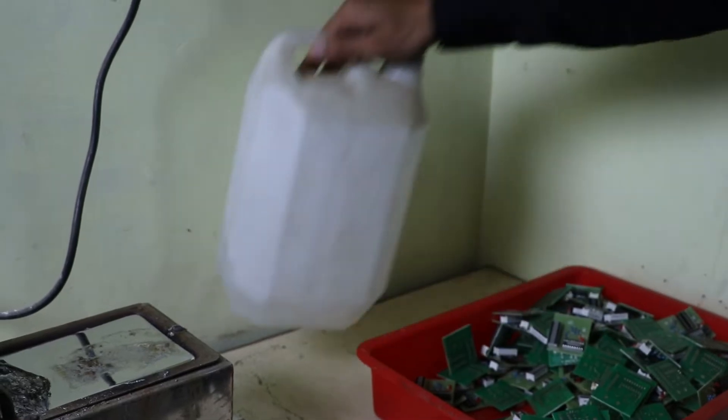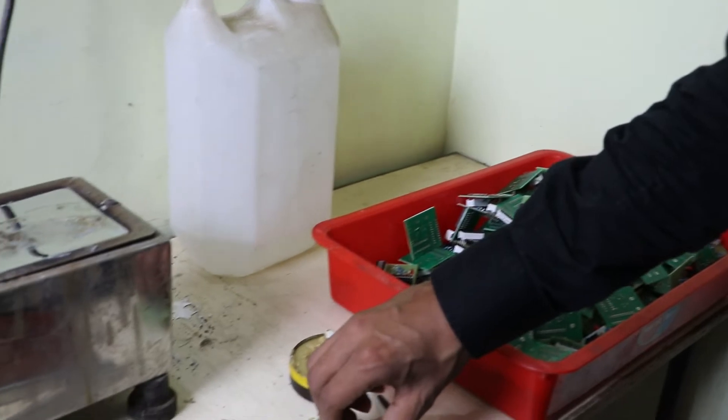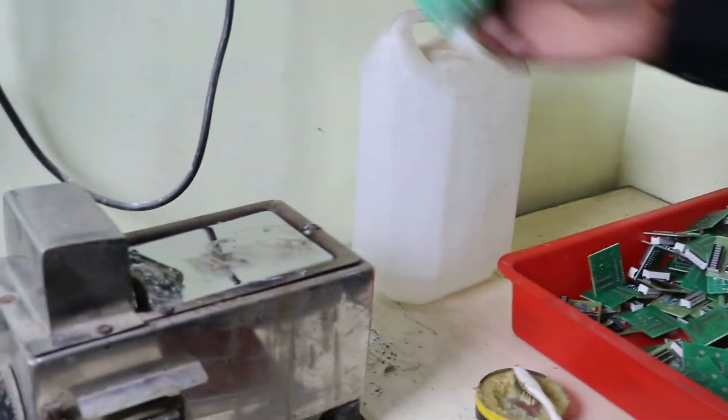This is liquid flux. You can spray it or dip the PCB in it, then put the PCB in the molten solder.